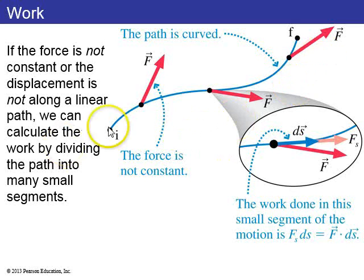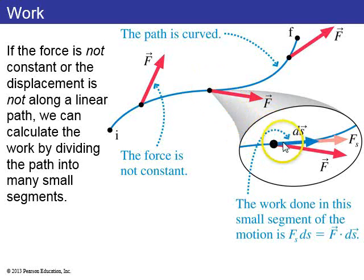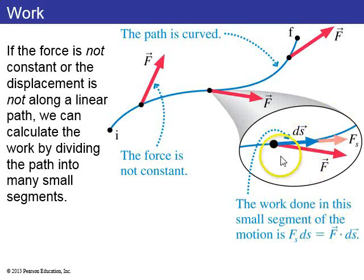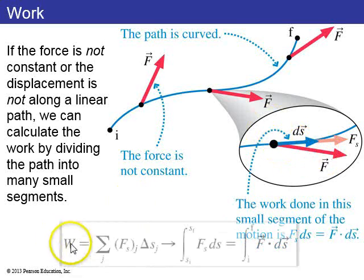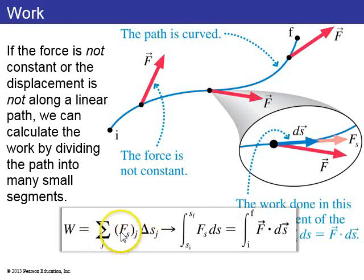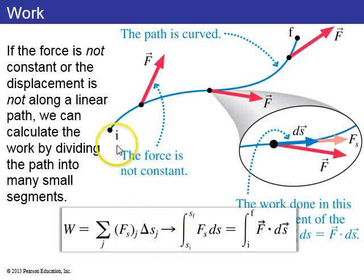In general, work equals force times delta r times cosine theta. If you have a non-constant force, or the displacement is not along a linear path, you have to do an integral. For every small step ds along the path, you take the dot product of ds with the force at that point. The integral looks like the sum of all force components in the s direction times delta s, which is the integral from i to f of F·ds.